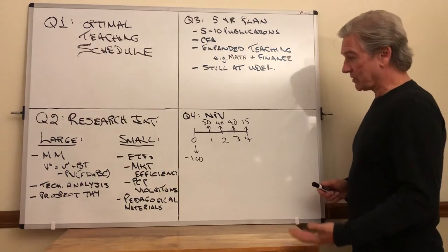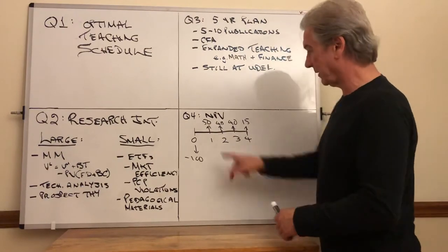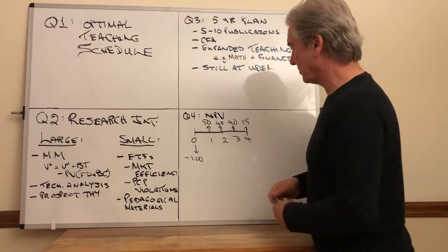Probably a simple way to start would be: well, you're going to spend a hundred dollars, do you at least get your hundred dollars back? Well, after one year, one period, let's assume they're years. After one year you get 50 dollars back, after two years you have 40 so there's 90.